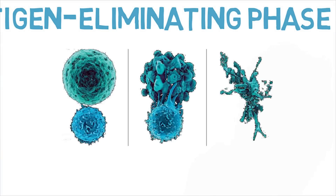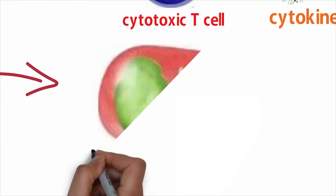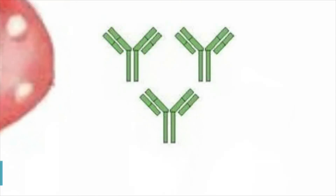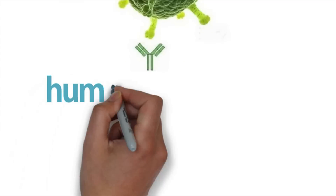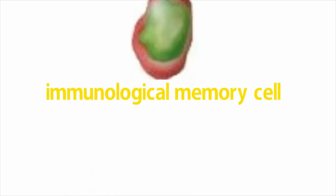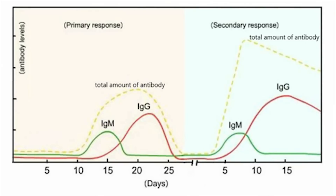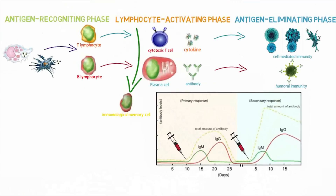In the third stage, the antigen-eliminating phase, cell-mediated immunity is formed, eliminating infected cells. After activation of B lymphocytes into plasma cells, antibodies are produced to destroy the antigens, called humoral immunity. Also, immunological memory cells are formed; as the number of contacts with specific antigens increases, memory cells increase and time to resist the antigens becomes longer.